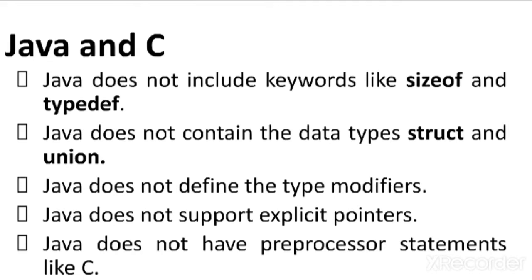Java does not have pre-processor statements like C. In C, we use pre-processor directive statements such as #include <conio.h> and #include <stdio.h>. These statements are not present in Java. Instead of that, we use import statements in Java. These are the major differences between Java language and C language.